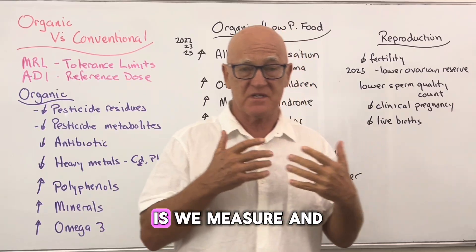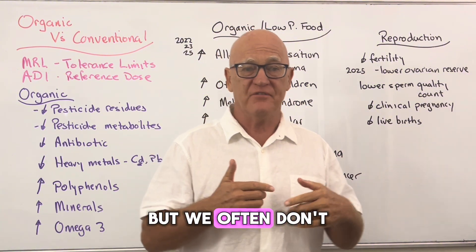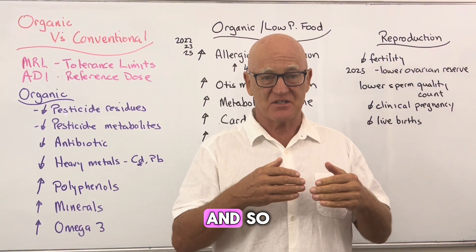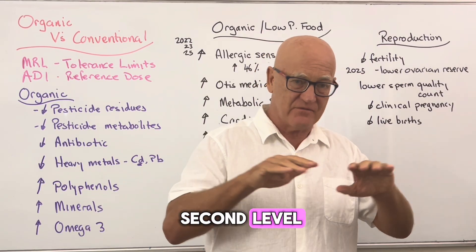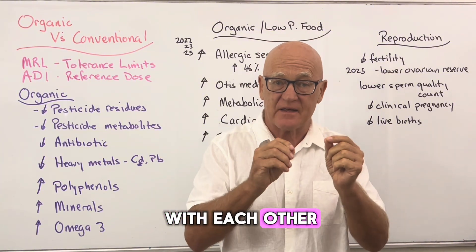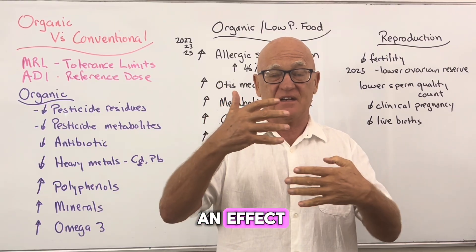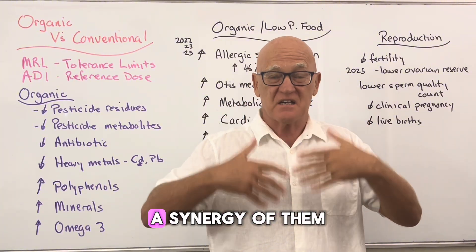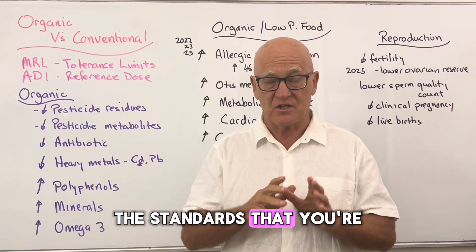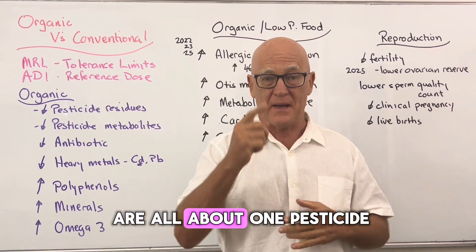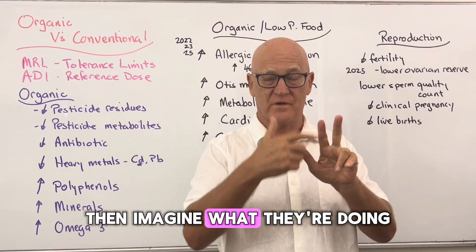A major challenge in this research is that we measure the original pesticides but often don't know what the metabolites — the breakdown products at the second or third level — are. It's very hard to calculate how these interact with each other. This is called synergy: sometimes pesticides interact with no effect, sometimes a small effect, sometimes a huge synergistic effect. The MRL and ADI standards are all calculated for one pesticide at a time — so if you have three pesticides with the same effect, imagine the combined impact.